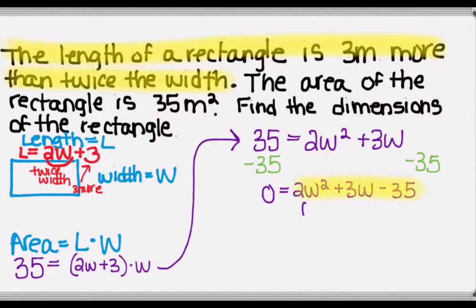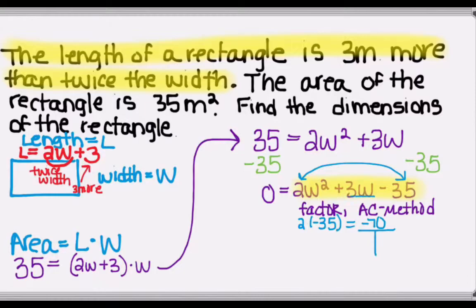And I'm going to use factoring to solve this problem. Although you could also use the quadratic formula. And when I factor, I'm going to use the AC method. So for the AC method, you start by multiplying the leading coefficient, or the A value, times the C value. In this case, that's 2 times negative 35, which is negative 70. And now I need to find two numbers that multiply to negative 70 and add up to 3, that middle term.